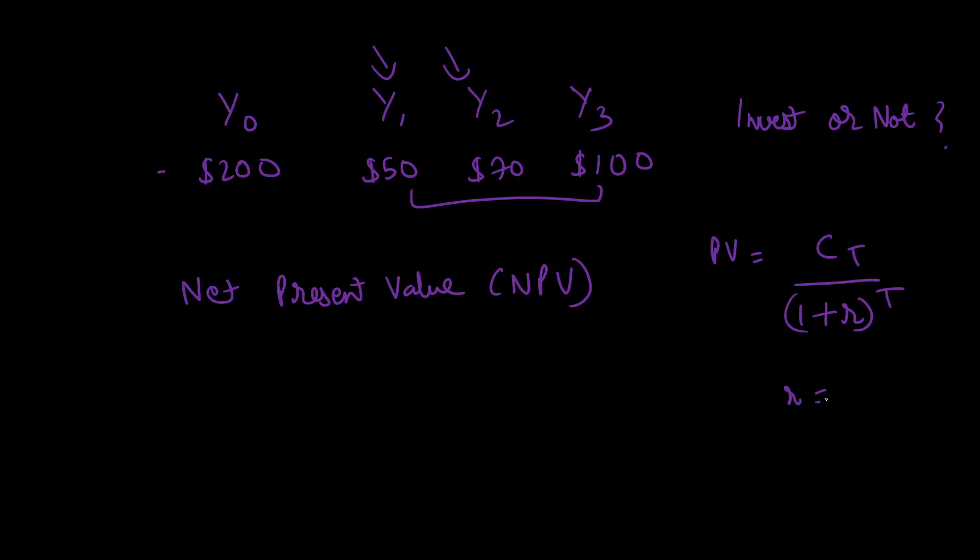Now for year zero, $200 is the present value itself as you're investing it in the present. You don't have to make any changes to it, so we'll just write -$200 as our first cash flow. For year one, you take the cash flow $50 and divide it by (1 + r) raised to the power of the number of periods. Here it's year one, so the number of periods is just one.